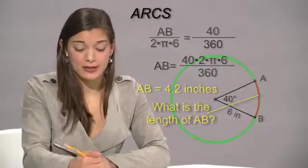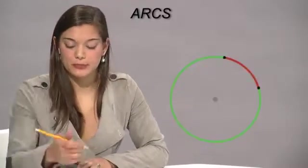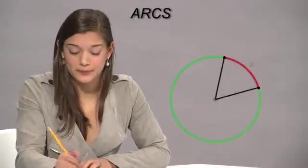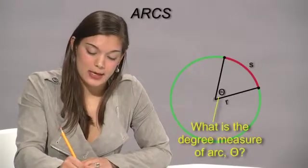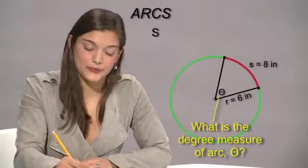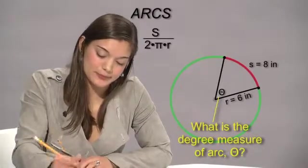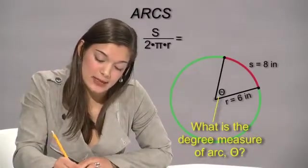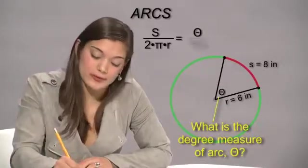So we figured out the length, but what about if we want to figure out the degree measure? Let's figure out how to do another kind of ratio. We just set it up the same way in this next example. And we want to say s, because that's the length of the arc, over 2 pi r equals theta, this missing angle, over 360.